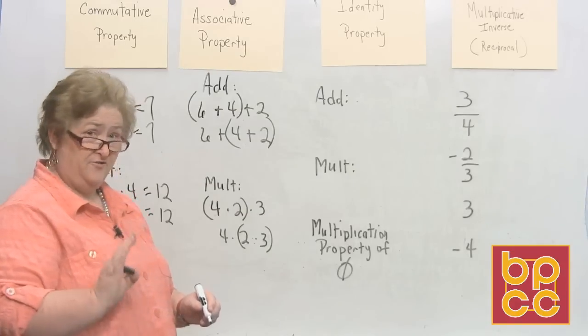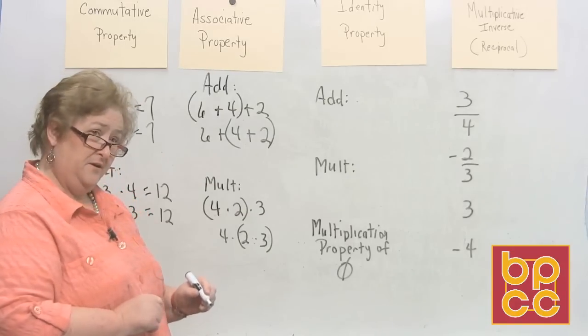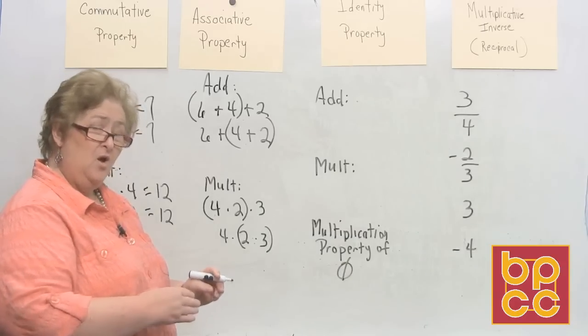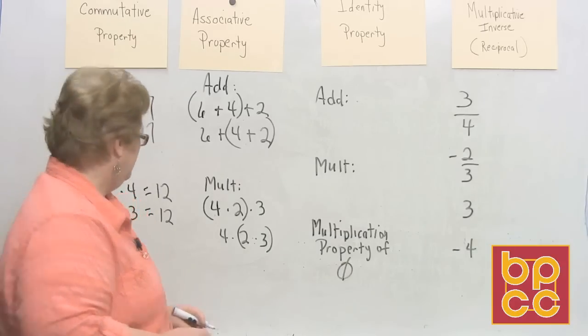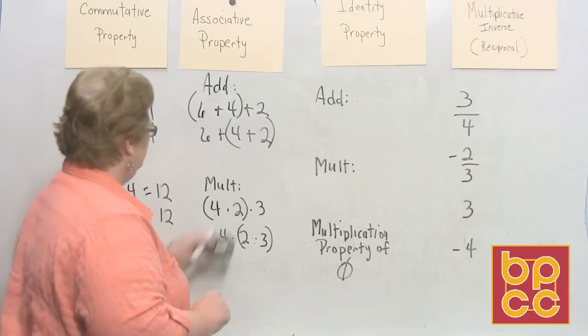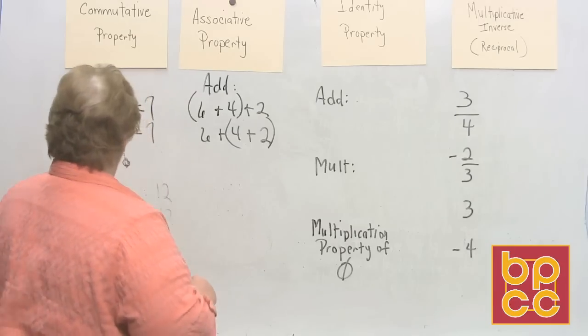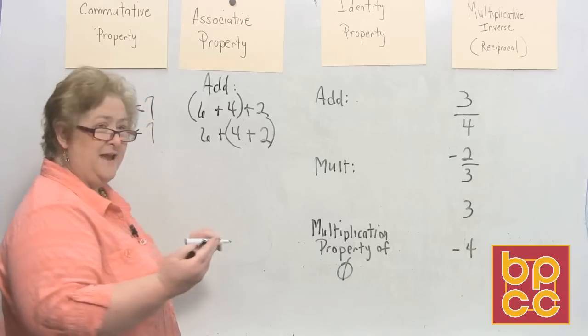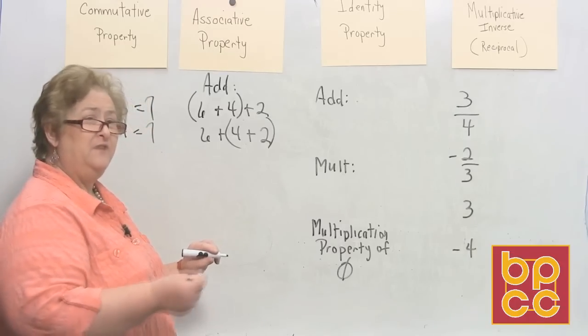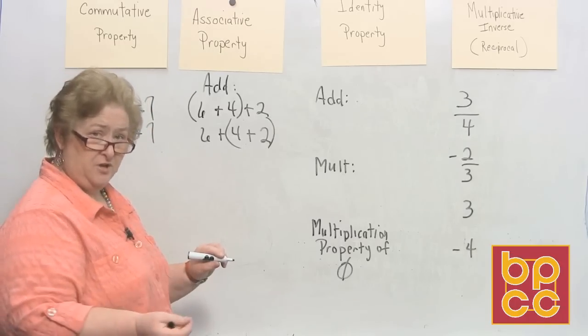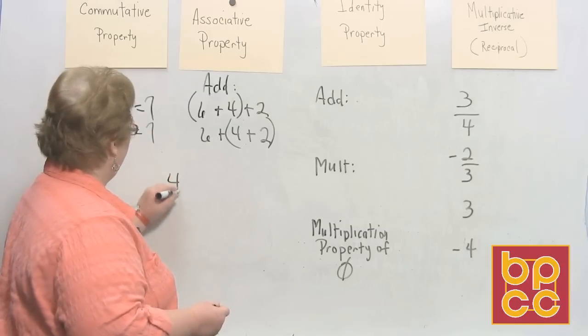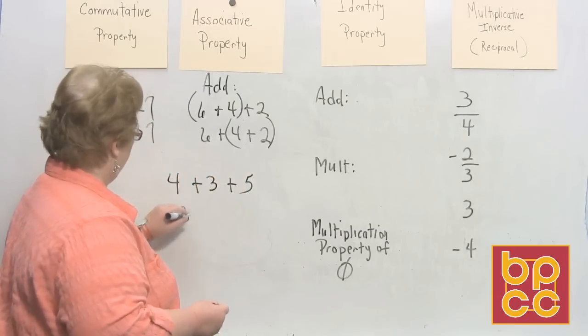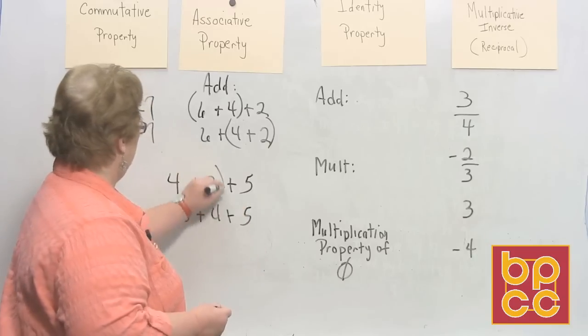Now I'm going to try to fool you. I'm going to put something up here, and I want you to decide if it is the commutative property or if it's the associative property. Okay, here we go. Let me erase these just a minute so I'll have room. Okay, I'm going to make an addition statement, and you tell me if it's commutative or if it is associative. I'm going to go 4 plus 3 plus 5, 3 plus 4 plus 5.